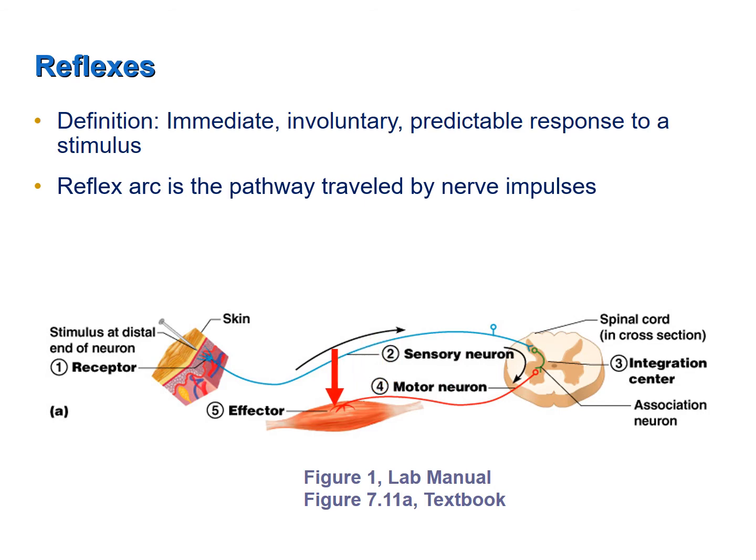If it is a somatic reflex, the effector will be a skeletal muscle. If it is an autonomic reflex, the effector will be smooth muscle, cardiac muscle, or glands.